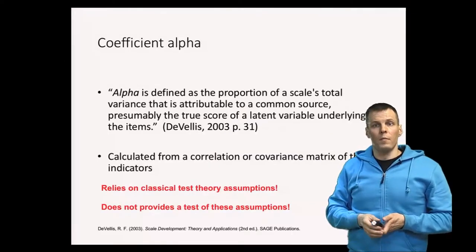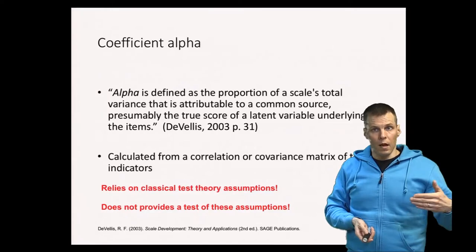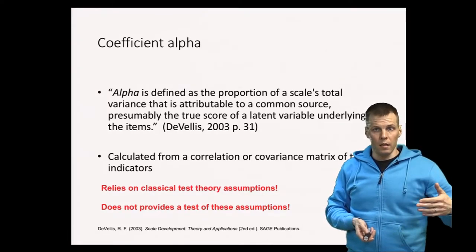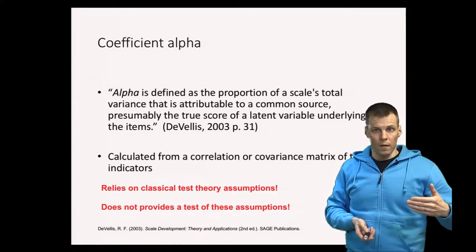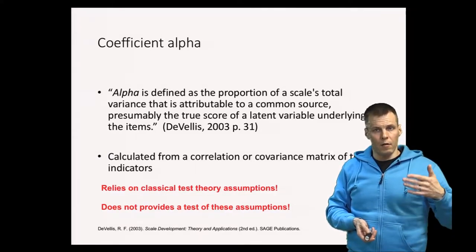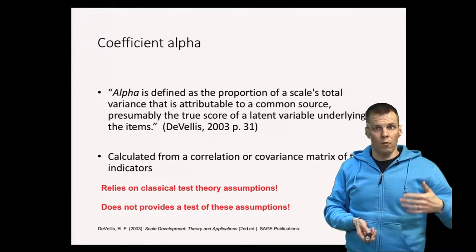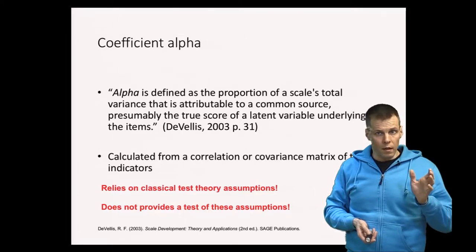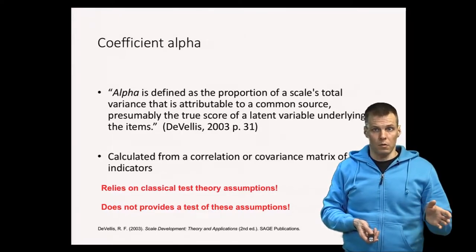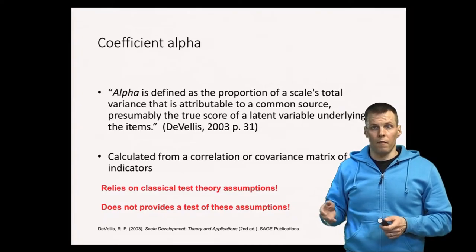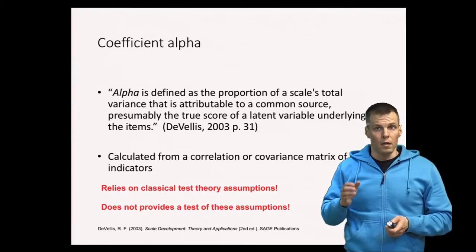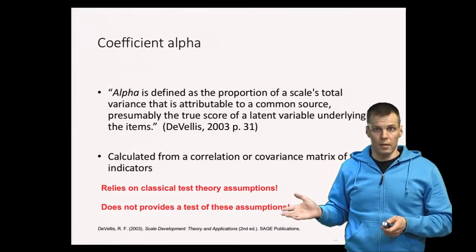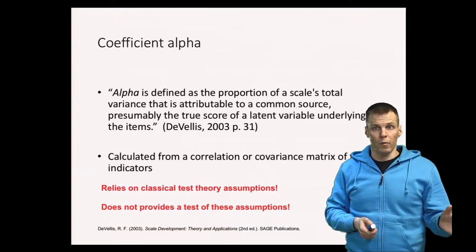So alpha is a reliability index and it relies on the classical test theory assumptions. Basically it means that your scale that goes into the alpha, the indicators must be unidimensional and there is no other error there except unreliability which is random noise. Then it doesn't provide any test of the classical test theory assumptions. So before you apply alpha at least you have to check unidimensionality and you also can check the tau equivalency which basically means whether the indicators are equally reliable.